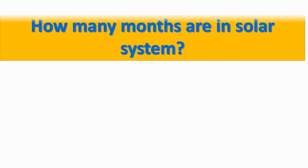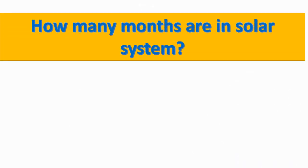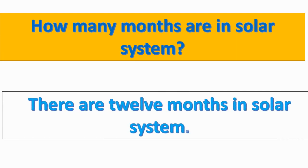Children, can you tell how many months are in the solar year? There are 12 months in the solar year. According to the Hindu calendar, there are 12 months in the solar year, just like the English calendar.